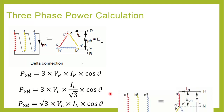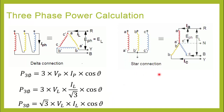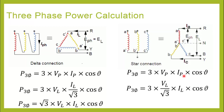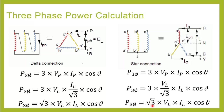Now let's take the star configuration. We again start with three-phase power equal to 3 × VP × IP × cosθ. In star configuration, the line voltage between two phases is divided across two windings, so phase voltage VP = VL / √3, while the line current equals the phase current: IL = IP. We substitute IP with IL and VP with VL / √3. Again, simplifying 3 / √3 gives √3, and we get the same formula: Three-phase power = √3 × VL × IL × cosθ.